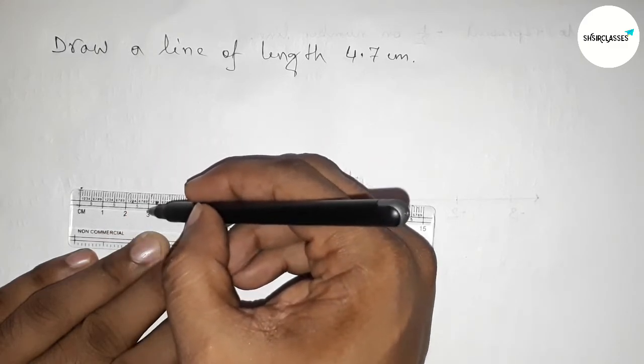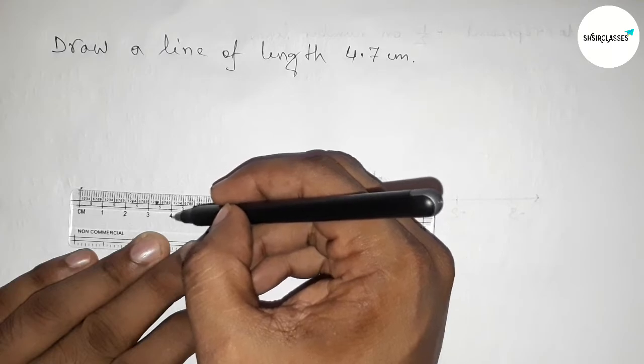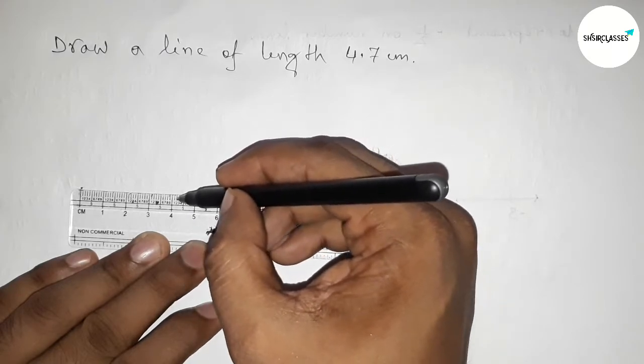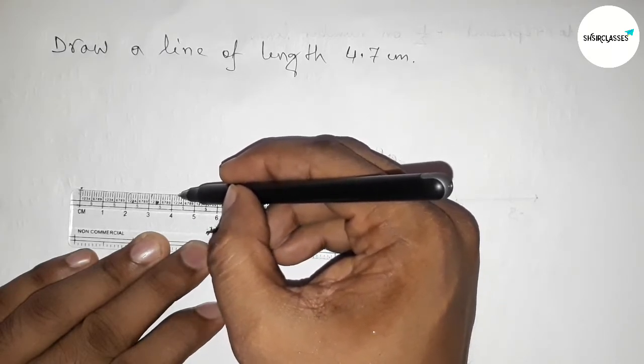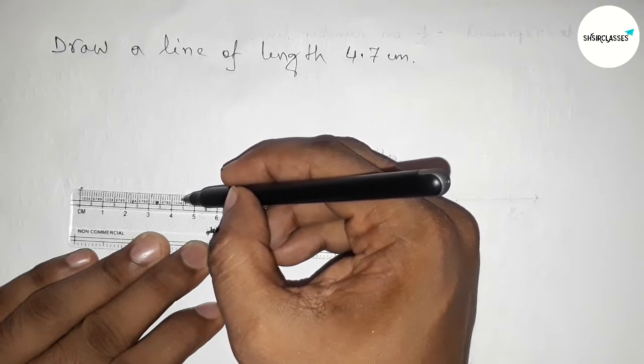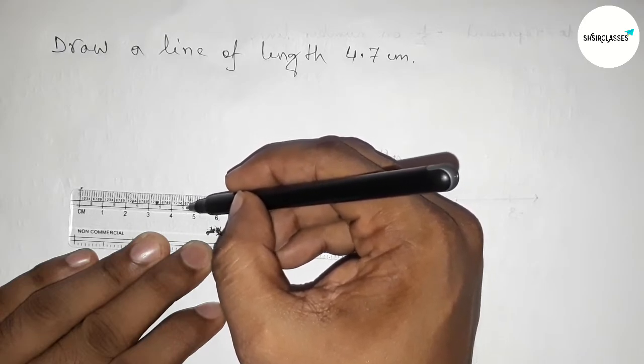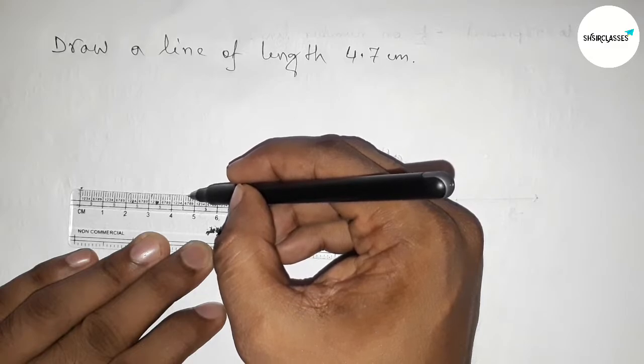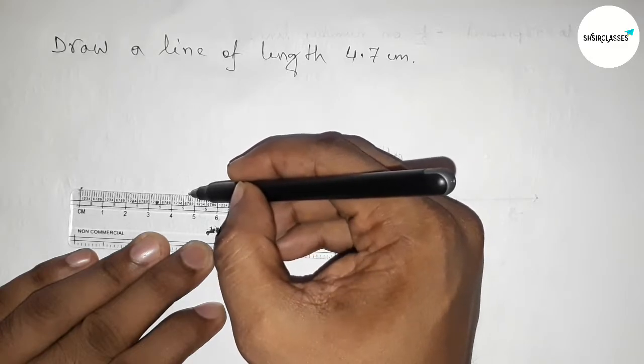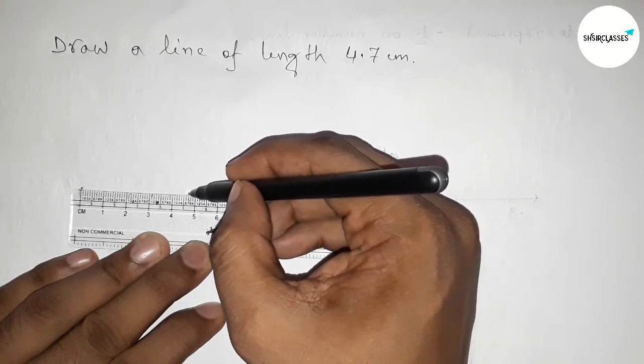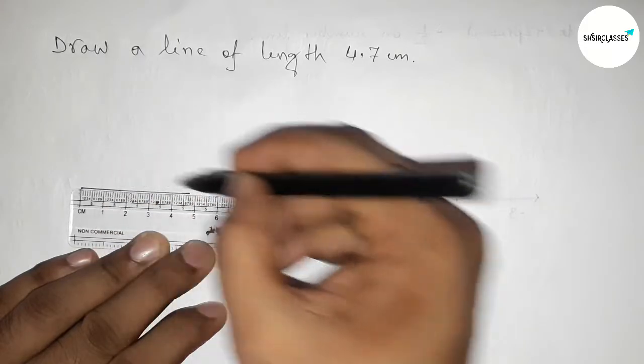This is 2 centimeter, this is 3 centimeter, and this is 4 centimeter. 4.1, 2, 3, 4, 5, 6, 7. So this is 4.7 centimeter. First marking this and joining this line.